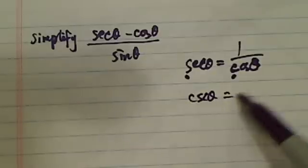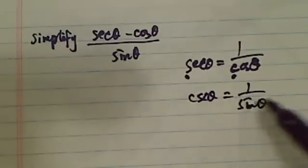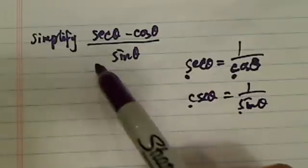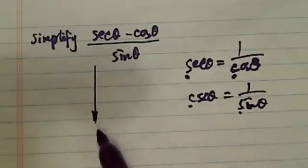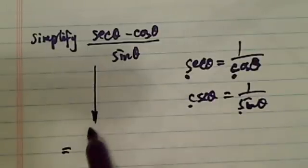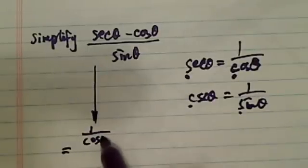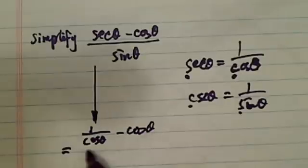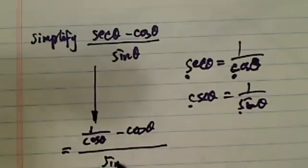So therefore, cosecant theta is 1 over sine theta. Those two are always the opposite. Let's use that. Go directly into it. So it's 1 over cosine theta minus cosine theta on top divided by sine theta.